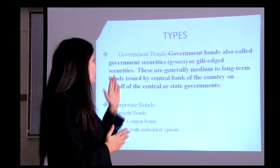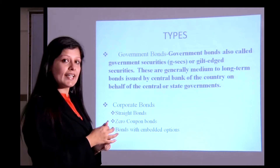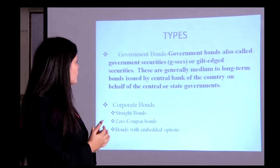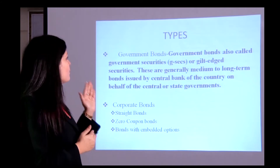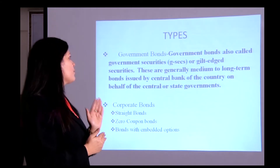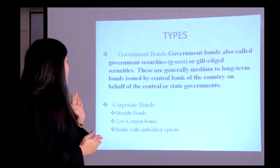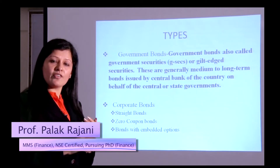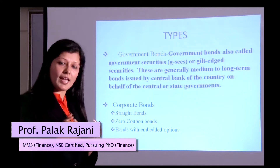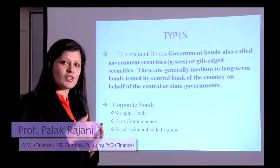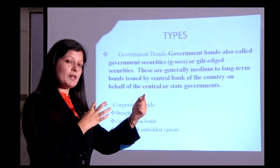There are two types of bonds: government bonds and corporate bonds. Government bonds are also called G-Secs or gilded securities — these are generally medium to long-term bonds issued by the central bank of the country on behalf of the central and state governments. Corporate bonds generally come in three varieties: straight bonds, zero coupon bonds, and bonds with embedded options.